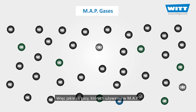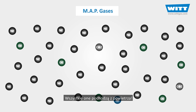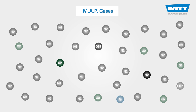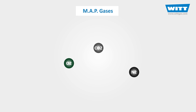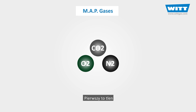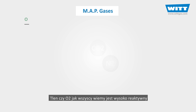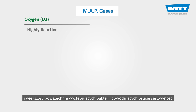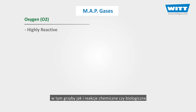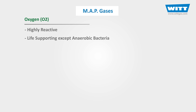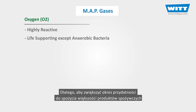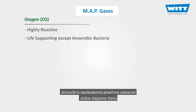What are the gases we use for MAP? All of these come from the air. The first one is oxygen, or O₂. Oxygen is highly reactive and most of the common spoilage bacteria, fungi, and chemical and biological reactions require oxygen to live and grow. Therefore, to increase the shelf life of most foods, the pack atmosphere should contain a low concentration of oxygen.